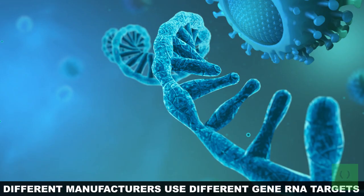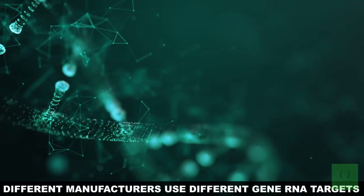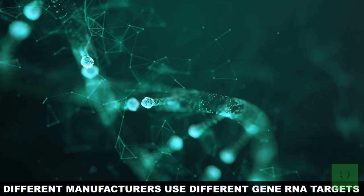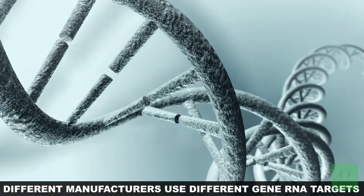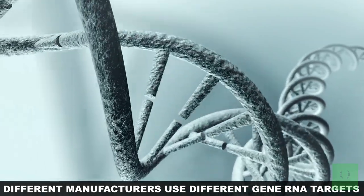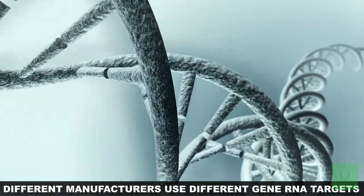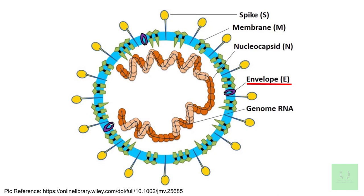Different manufacturers use different RNA gene targets, with most targeting one or more of the following areas on the virus: 1. The envelope; 2. Nucleocapsid; 3. Spike; 4. RNA-dependent RNA polymerase.